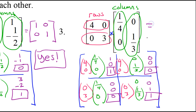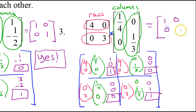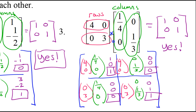The product matrix is 1, 0, 0, 1 — the identity matrix. So that means yes, once again these two matrices are inverses of each other. That's how you can tell whether or not two matrices are inverses of each other.